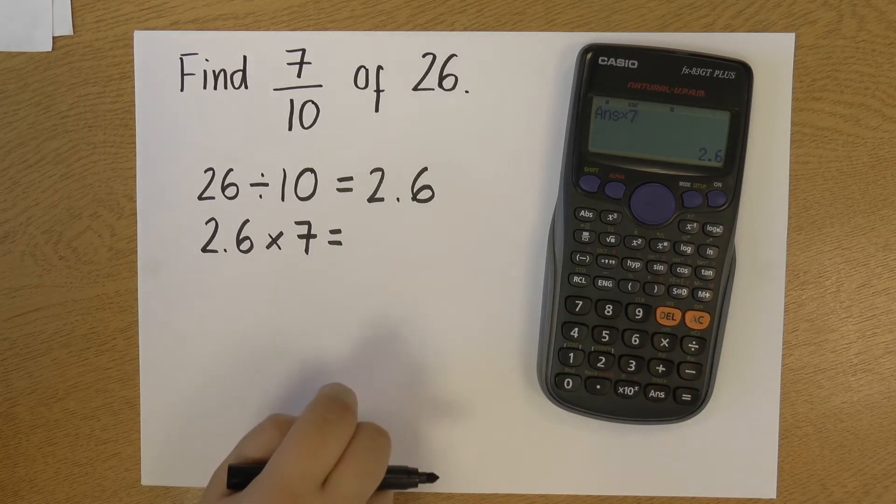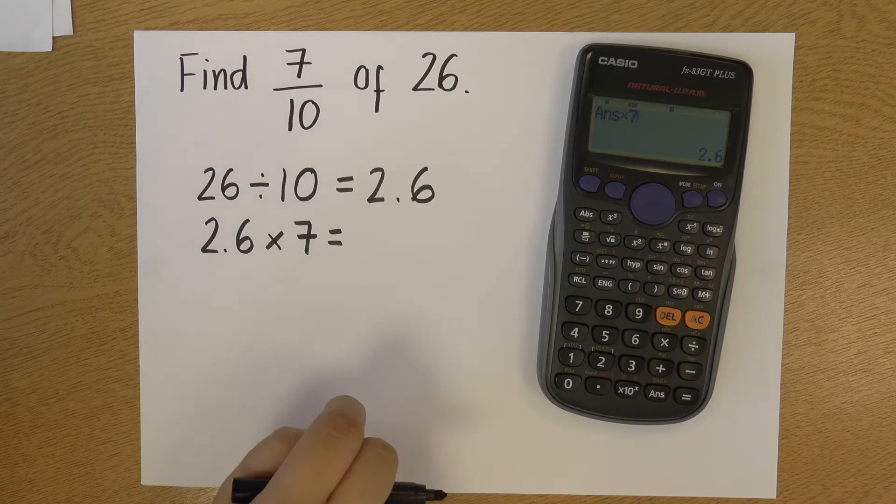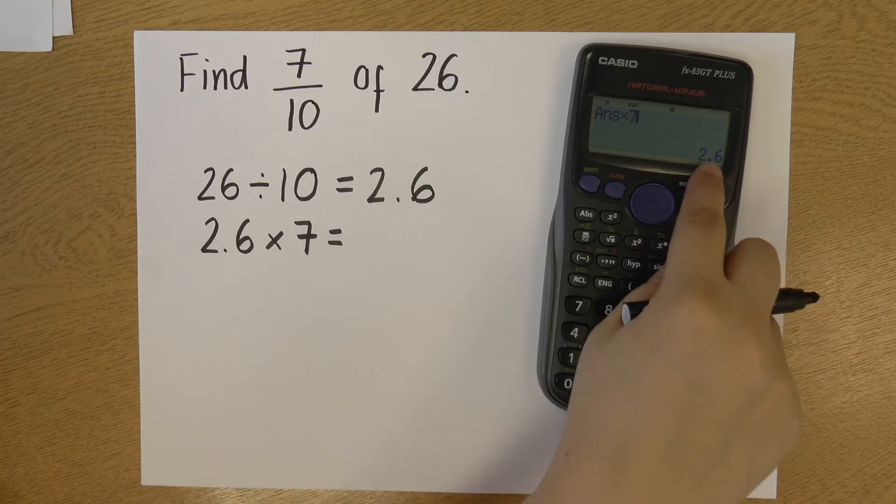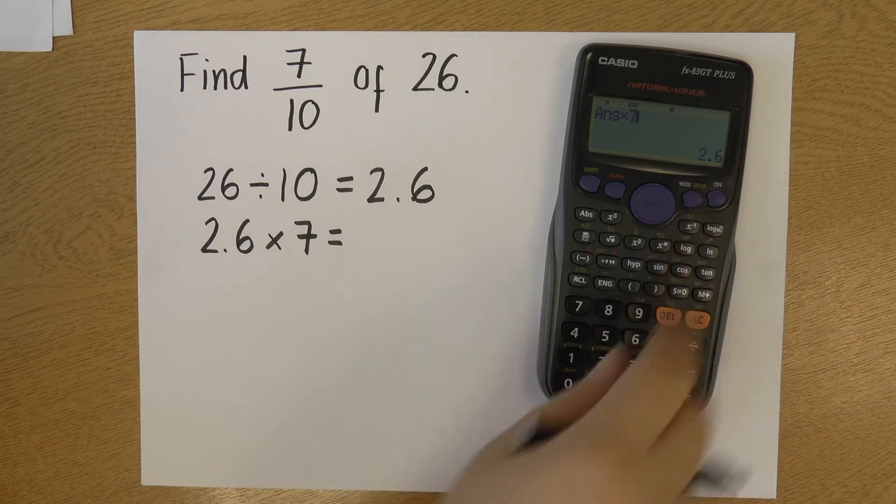And you can see it comes up on the screen, ands times 7. That ands stands for answer. So what that's doing is timesing whatever my previous answer was by 7.